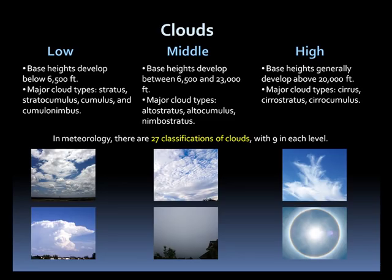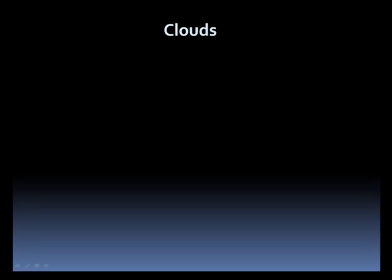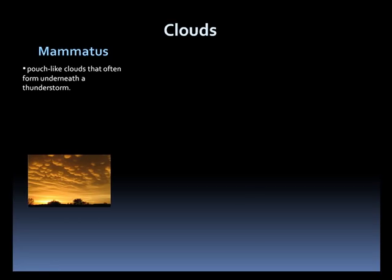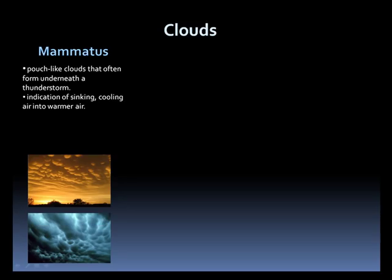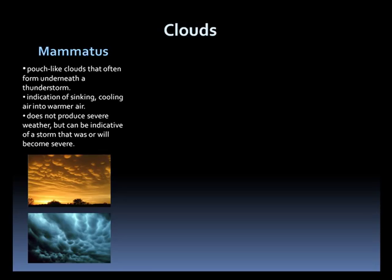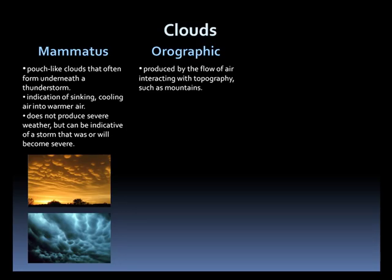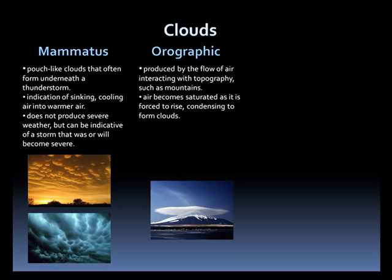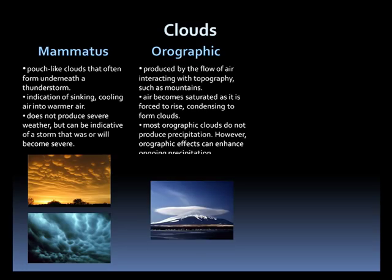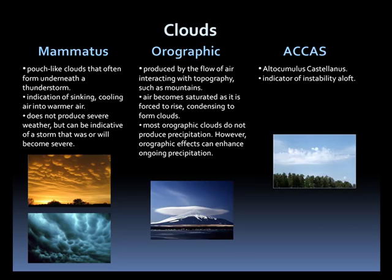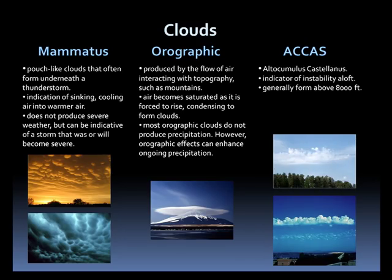Let's take a look at a few of the more interesting cloud types. Mammatus clouds are pouch-like protrusions that form on the underside of storm clouds. They indicate sinking cooler air moving into warmer air. They do not produce severe weather but can indicate a storm that has or will become severe. Orographic clouds develop in response to airflow interacting with mountains or other topography. The air becomes saturated as it is forced to rise, condensing into clouds. Most orographic clouds do not produce precipitation, but the orographic effects can enhance ongoing precipitation. ACCAS is short for altocumulus castellanus. These clouds indicate instability aloft and can be a good indicator that thunderstorms will develop in the afternoon.